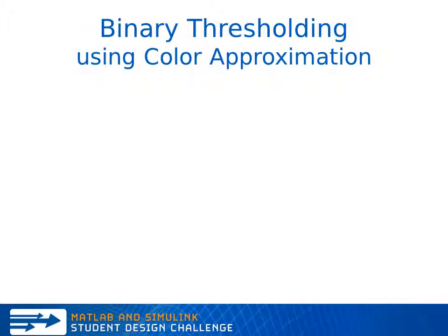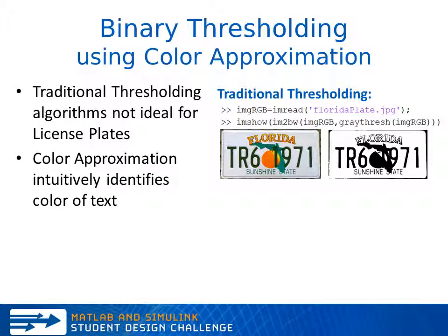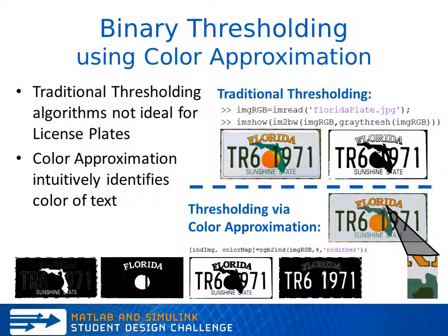Our first step is binary thresholding using some color approximation. Traditional thresholding algorithms, such as the one shown on the right, are very common in MATLAB but are not the most suitable for determining the different colors in the license plate. Instead, we use color approximation to identify the color of the text and separate that from the other colors in the image as shown. You can see that each pixel has been rounded to one of four values: orange, dark green, light green, and white, and that we have four resulting images.